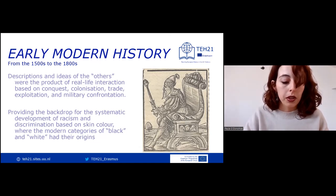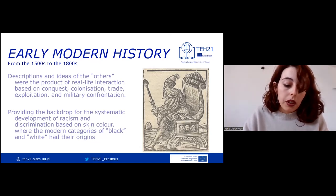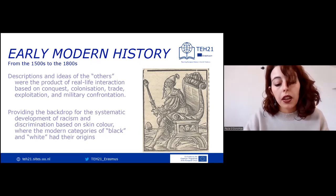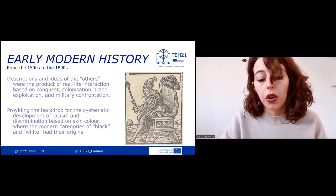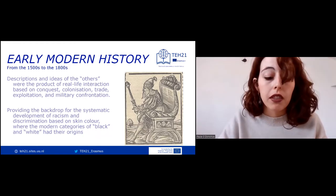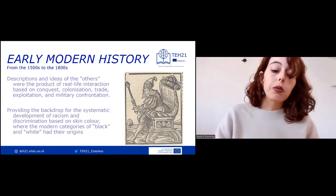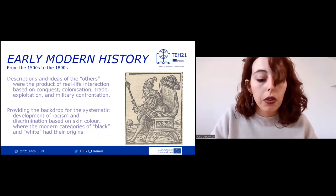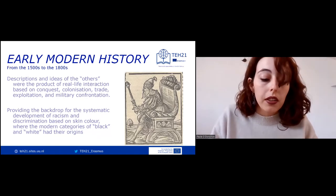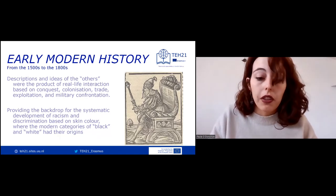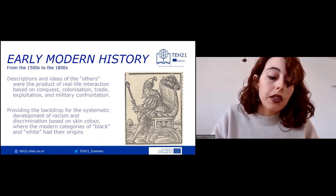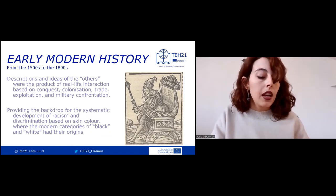Although multi-directional contact proliferated between different regions of the world during this period, it was the American continent that Europeans found most alien in relation to their existing frameworks. This feeling of surprise and astonishment is not comparable to encounters with other parts of the globe. Since antiquity, Europeans had cultivated knowledge of Africa, even if incomplete and distorted, and interaction with different parts of Asia dates back millennia.